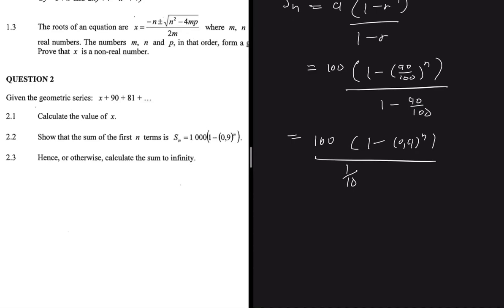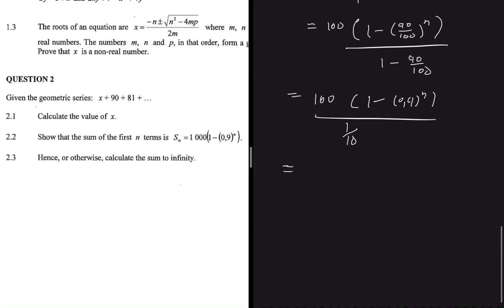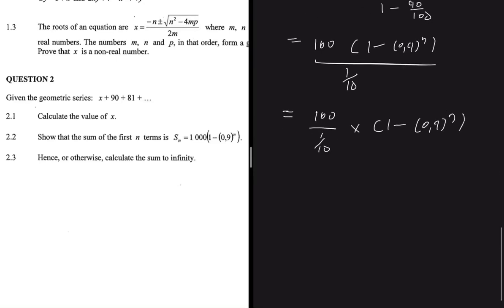Because if you subtract 90 divided by 100 from 1, you're left with 1 divided by 10. So from here, we know that if we have A multiplied by B, everything divided by C, this is the same as A divided by C, multiplied by B. So if we apply that idea here, we're going to get 100 divided by 1 divided by 10, multiplied by 1 minus 0.9 to the power N. And then 100 divided by 1 divided by 10, that will give you 1000 multiplied by 1 minus 0.9 to the power N, which is what our equation asked us to show.